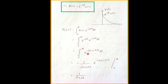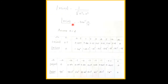Integrating and applying the limits, we get X(jω) = 1/(a + jω). The magnitude is |X(jω)| = 1/√(a² + ω²). The phase is ∠X(jω) = tan⁻¹(−ω/a) = −tan⁻¹(ω/a).